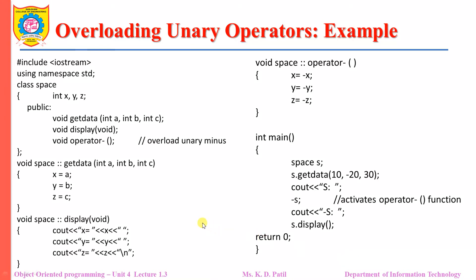Here we will see the example of unary operator overloading. This is a class called 'space' which has three data members: x, y, and z. It has member functions: getData, display, and operator. Please observe how this member function is declared — the return type followed by the keyword 'operator', which is used for operator overloading, followed by the operator symbol. For unary minus, no parameter is passed.